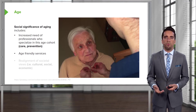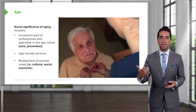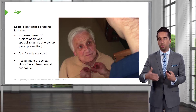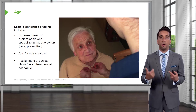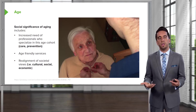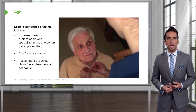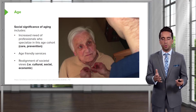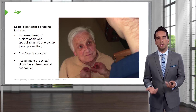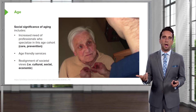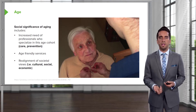Age-friendly services and even realignment of social values are needed. If elderly individuals need to fill out forms, they'll need large fonts or assistance due to cognitive decline and vision issues. Society needs to adjust culturally, socially, and economically to what we perceive as the roles of our elderly counterparts. Just because they're old doesn't mean they can't work or contribute — they're a very useful part of society, bringing experience and the ability to contribute.